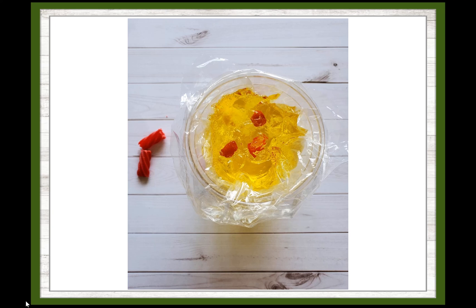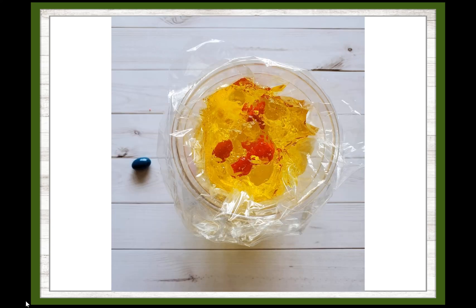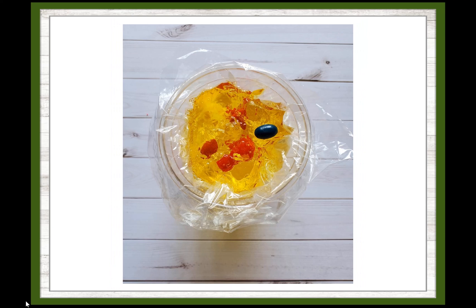The red vine pieces will be added next. The red vine pieces represent the endoplasmic reticulum, an organelle that is responsible for producing and transporting various things around the cell, such as proteins and other molecules. We'll also add a blue jelly bean. The blue jelly bean represents the vacuole, an organelle that is responsible for storage, usually of water.